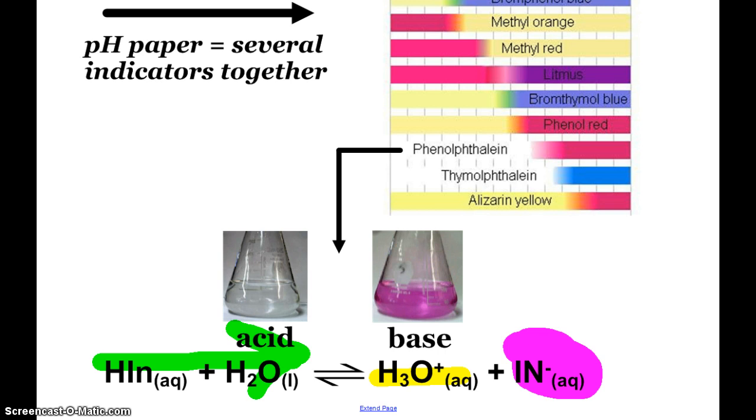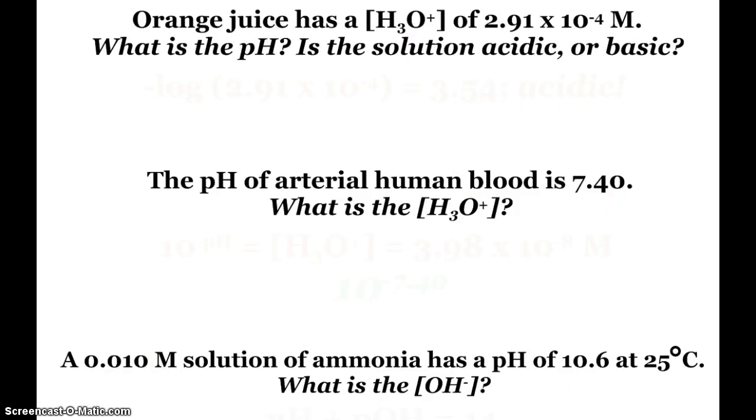All right, so let's just look at a couple example problems that we can do mathematically with our pH stuff. And then we will talk about this, review a little bit, and end up having a quiz on all of this stuff in a couple days. But here we see orange juice has a concentration, a hydronium ion concentration, 2.91 times 10 to the negative 4th. What is the pH? And is this an acidic or basic solution? You could already see that it's definitely acidic because 10 to the negative 4th, as far as the molarity is concerned, hydronium is greater than 10 to the negative 7th. But it's easier to find the pH. When I take the negative log of the hydronium concentration, I get 3.54. pH less than 7 is definitely acidic.